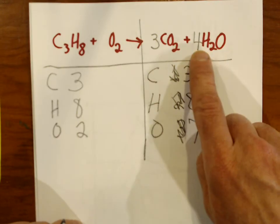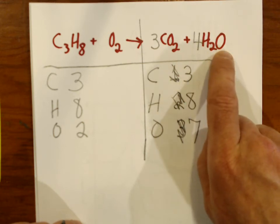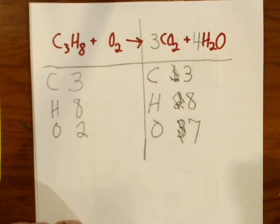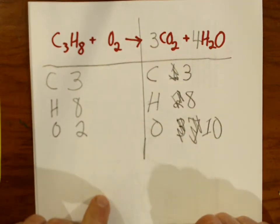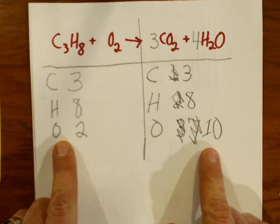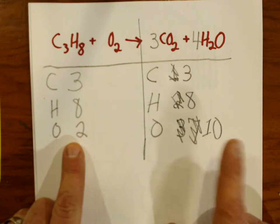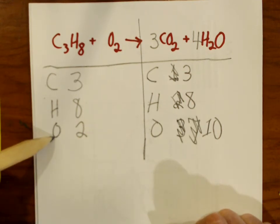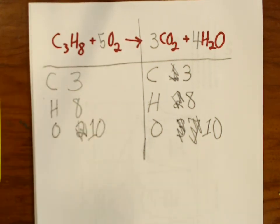But the four in front of water changes oxygen yet again. The four in front of water means four oxygen atoms there, plus the six oxygen atoms from CO2. Four plus six is ten. So oxygen on the product side is now ten. Carbon is balanced, hydrogen is balanced — now we've got to face oxygen. Two can easily turn into ten: two times five is ten. So I'll find oxygen and put a big fat five in front of it — two becomes ten. And we are balanced.